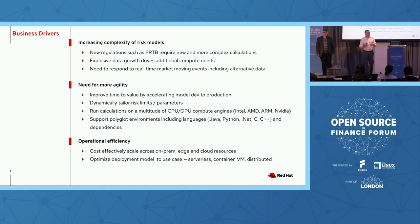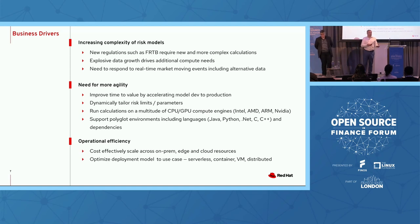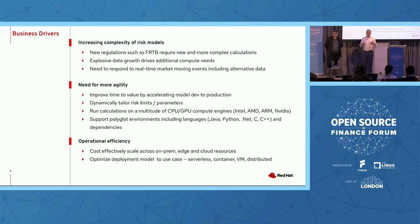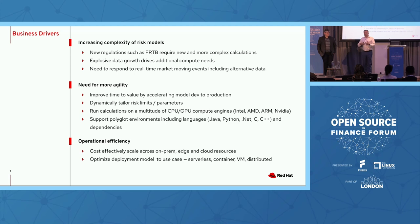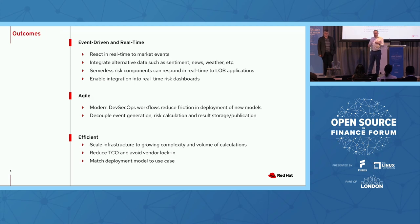The first theme is increasing complexity of risk models — whether it's FRTB or climate risk, models are getting more complex. There's a need to bring in alternative data beyond market data: weather models, sentiment, and other data types. Second, we want to be more agile — moving things quickly from the minds of our quants into production. Third, banks want to be efficient: whether to run on-prem, cloud, serverless, distributed, VMs, or Kubernetes — being agile about where we run workloads and reducing cost.